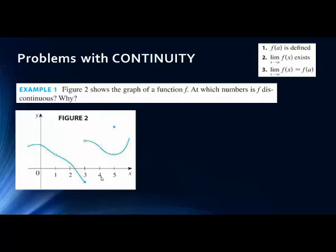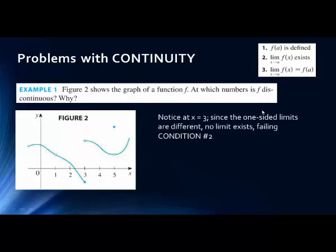Let's look at this from a pictorial standpoint. It is really important for the homework and tests that you know these three conditions for continuity. If you're asked which numbers make f discontinuous and why, it's asking you to explain in terms of one of these three things. It might be because f(a) is undefined, because the limit doesn't exist, or because the limit doesn't equal the functional value.